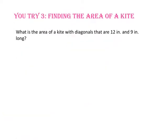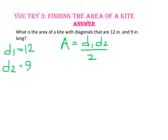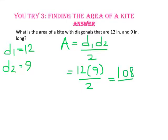Pause the video and do You Try number 3. What is the area of a kite with diagonals that are 12 inches and 9 inches long? Starting with the formula, diagonal 1 times diagonal 2 divided by 2, substitute 12 and 9 for the diagonals and simplify. 12 times 9 is 108, divided by 2, is 54 inches squared.